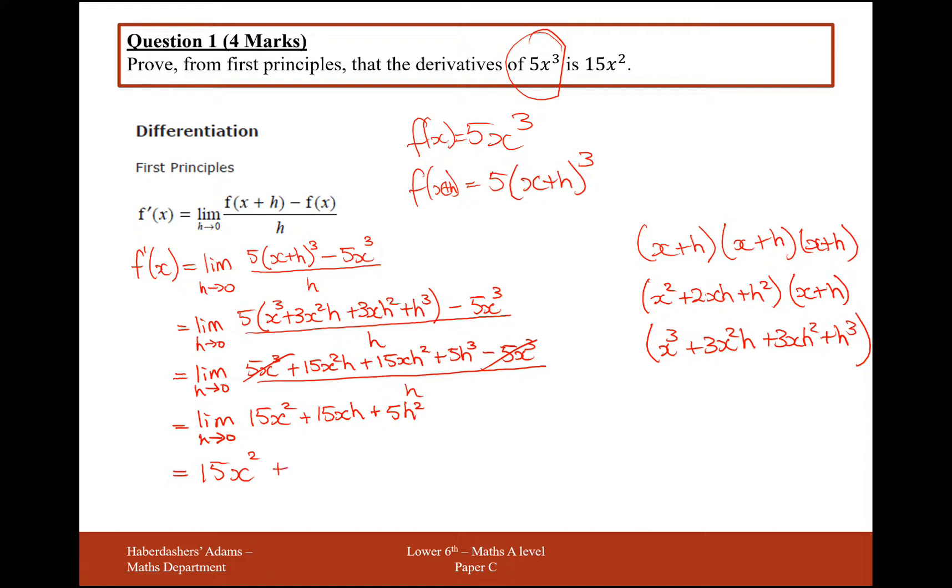So it would be 15x²+0+0. So we will therefore be left with 15x² as h tends towards 0. So the answer there, as we expected, 15x². Okay great, four marks.